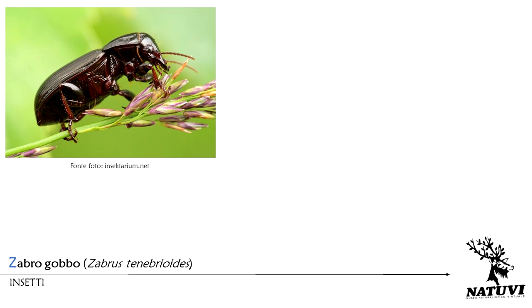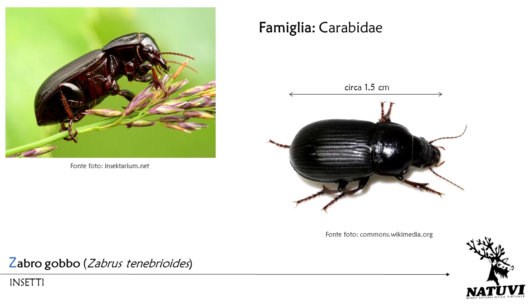Lo zabro gobbo, Zabrus tenebrioides, è un coleottero appartenente alla famiglia Carabidae, i cui esemplari adulti possono raggiungere dagli 1,5 fino a 2 cm di lunghezza.